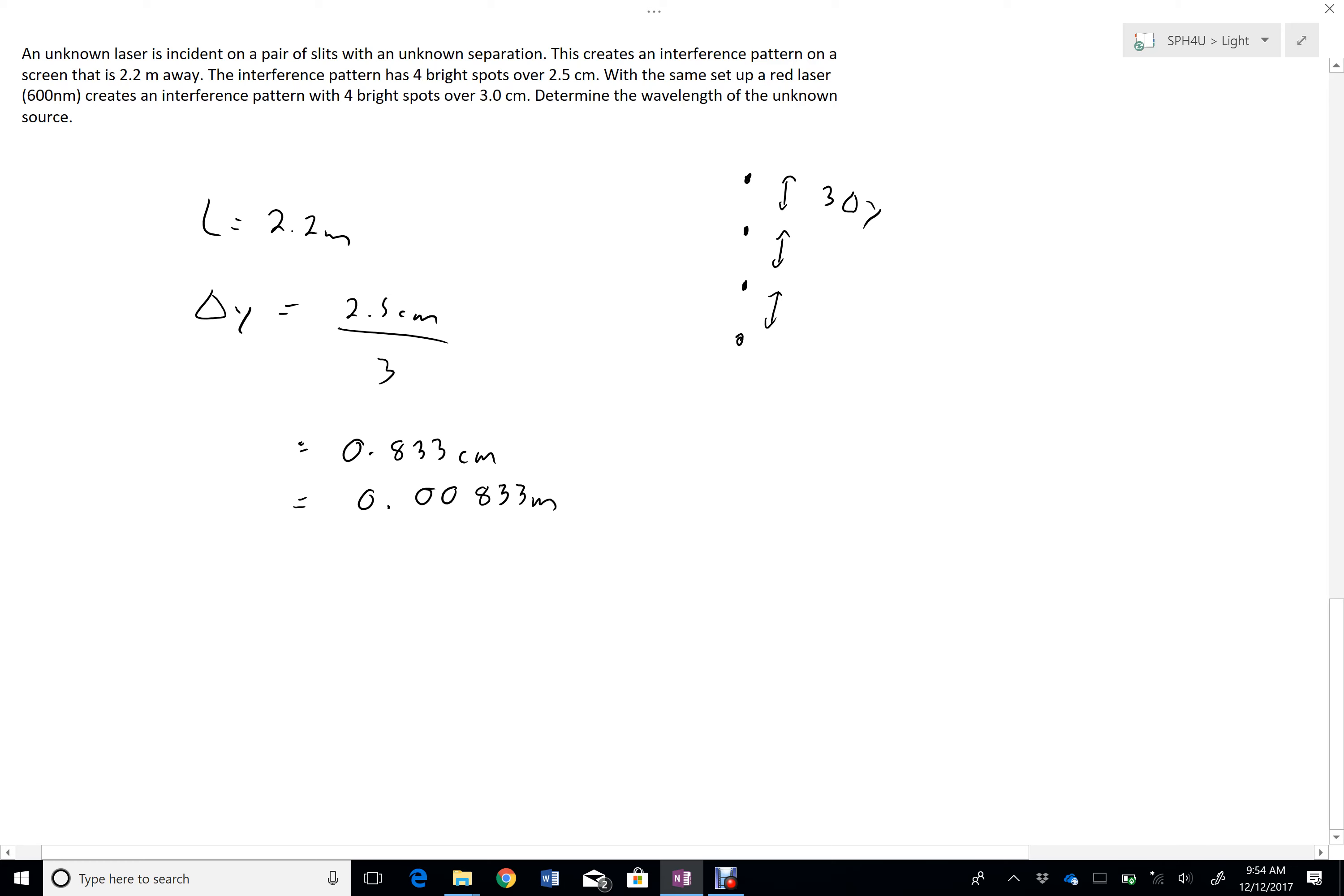With the same setup, a red laser, 600 nanometers, creates an interference pattern with four bright spots over 3 centimeters. So with L equals 2.2 meters, this is my red, this is my unknown.